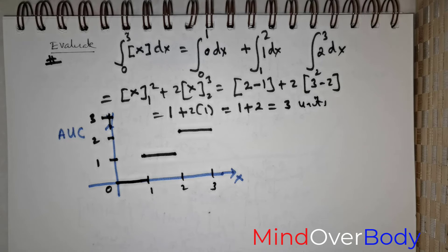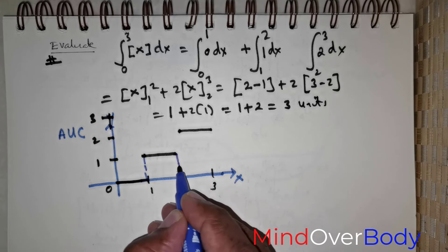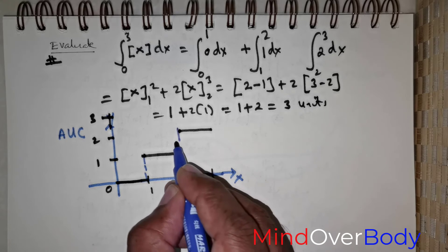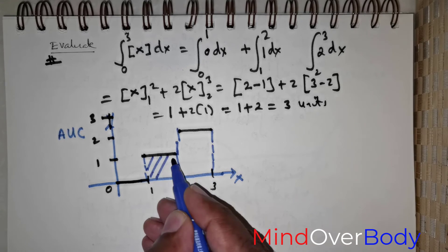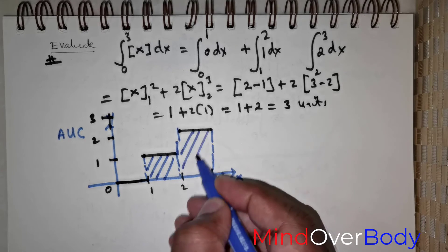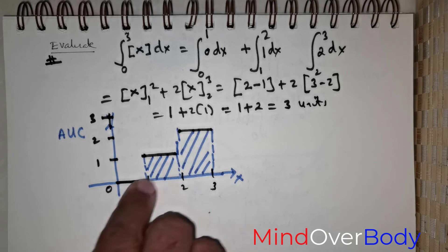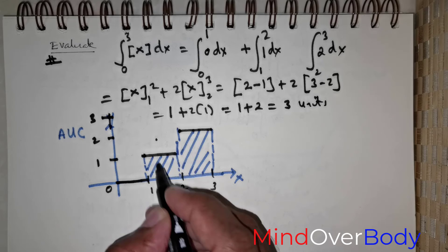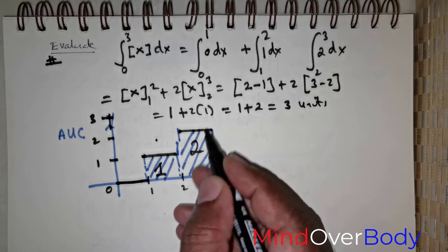So, if we were to find the area under the curve, then this is how it will look. Okay. So, this is what is required. Now, if you were to observe this, clearly this area is going to be 1 unit. And this area is going to be 2 units.